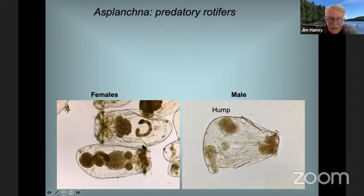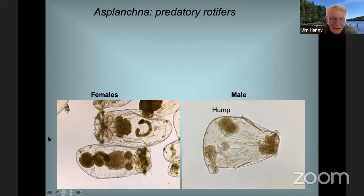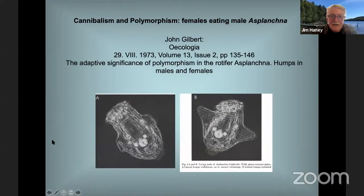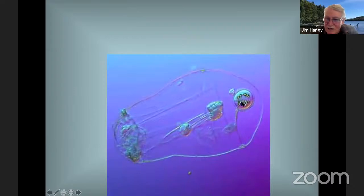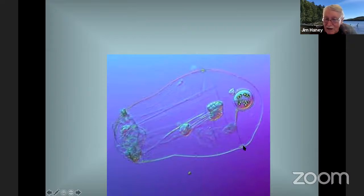Just as with spiders — where the female may eat the male — this also occurs in rotifers. Researcher John Gilbert at Dartmouth College discovered that female Asplanchna would eat males unless the males produced a hump on their back, making them too large to be ingested. So hump formation in males evolved as protection against overly ambitious females. Here you can see the protuberances the males produce to protect themselves.